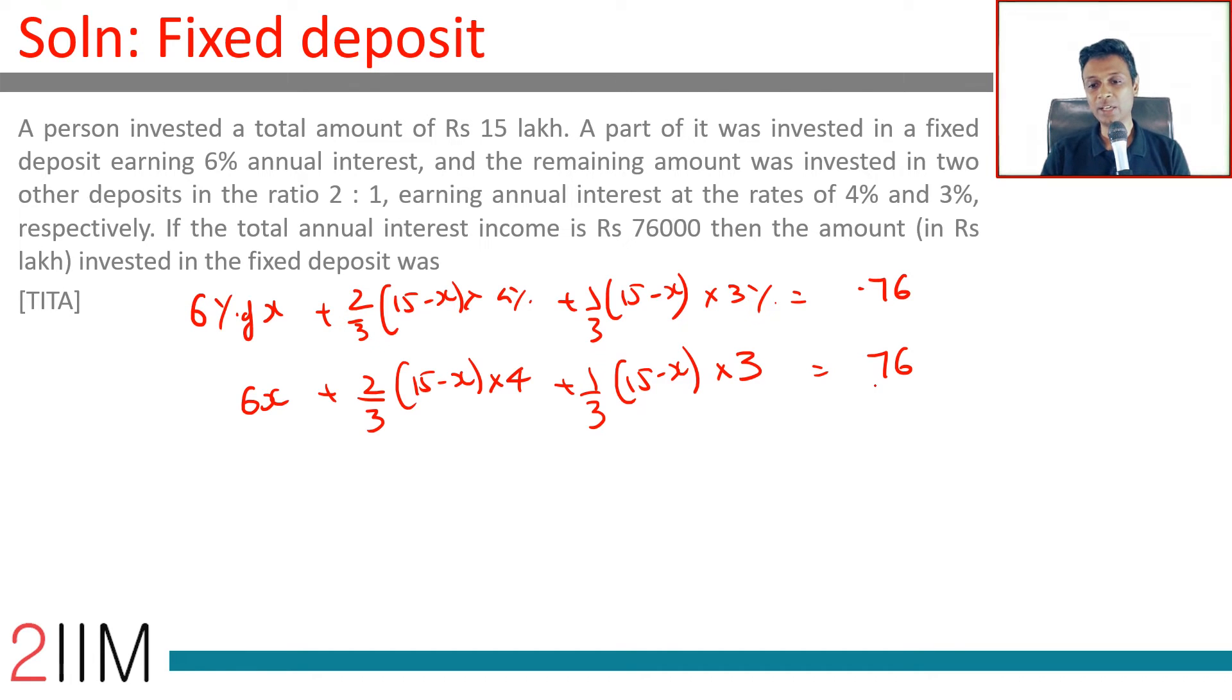Let's expand this. This is (15-X) times 8/3 plus (15-X) times 3/3. So 6X plus (15-X) times 11/3 equals 76. That's 6X plus 165 minus 11X, divided by 3, equals 76.